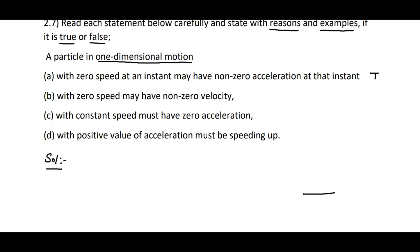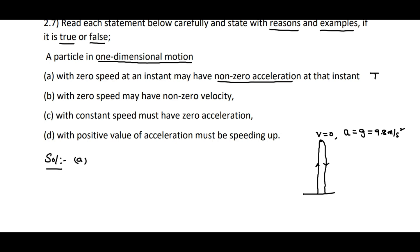How can this be possible? If a body is thrown vertically upwards, after reaching maximum height the body returns back. So at maximum height the speed is zero, but with non-zero acceleration — acceleration is not zero, but a is equal to g, that is 9.8 meters per second squared.